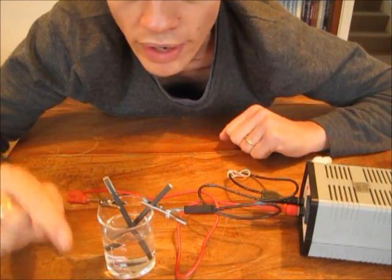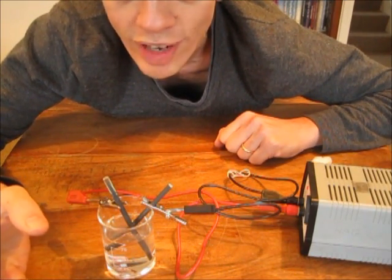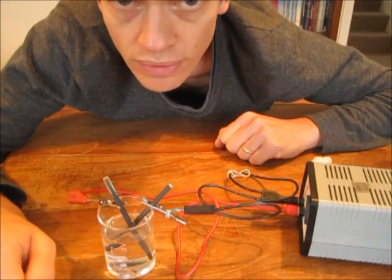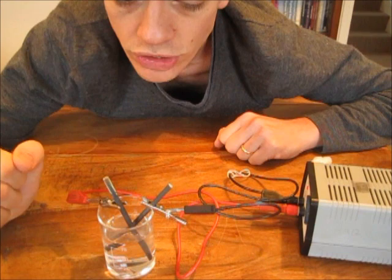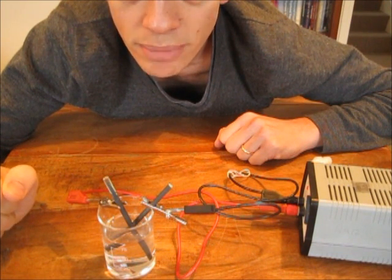I know that at one electrode what is being given off is chlorine gas. I can smell that. At the other electrode what is being given off is hydrogen. We are now going to look at that in more detail.